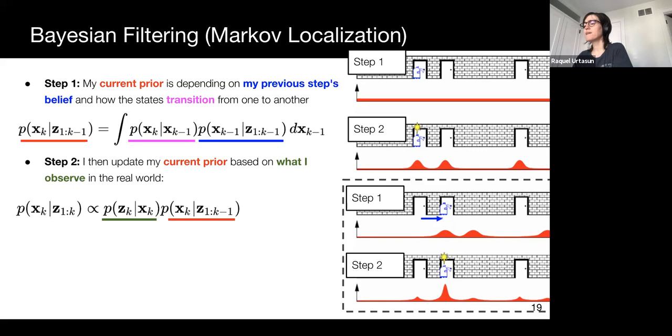Finally, in the second step of the second iteration, the robot observes another door and fuses this information with its current belief. This additional information helps disambiguate the robot's pose, allowing it to converge to a mostly unimodal distribution over its location.